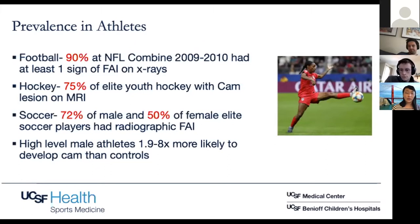A lot of this has to do with abnormal joint forces, as well as range of motion and repetitive stress and trauma that causes these changes to develop. Obviously not all of these athletes are symptomatic — 90% of football players are not getting hip scopes or requiring surgery. But it's important to know that these changes are out there.